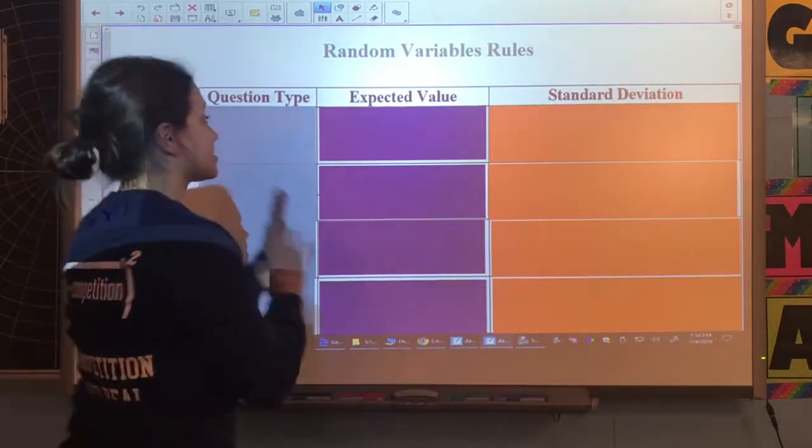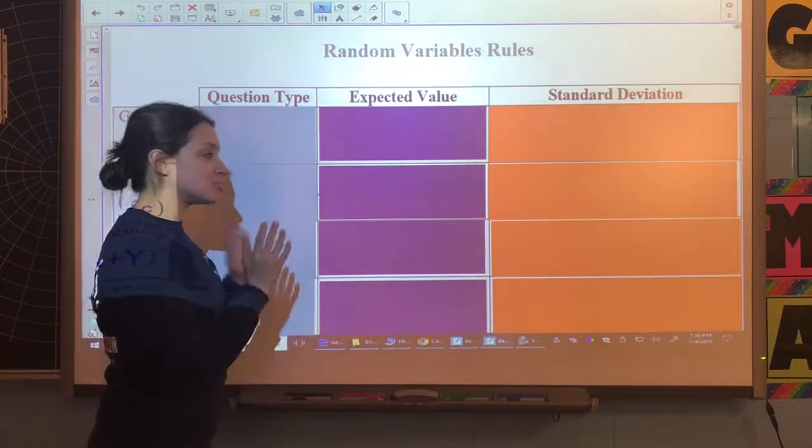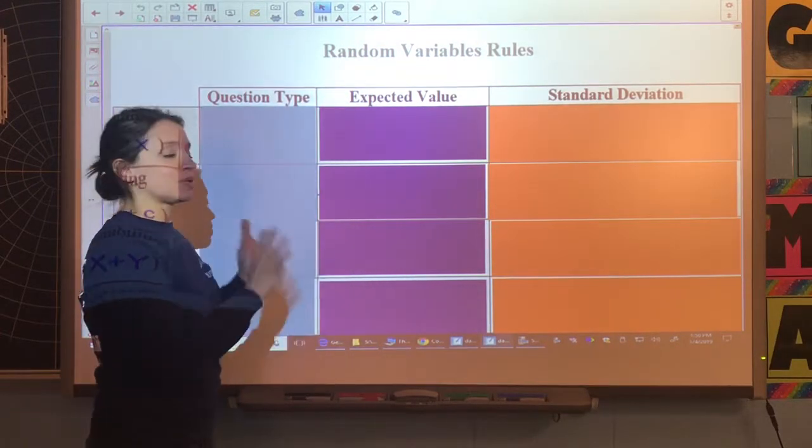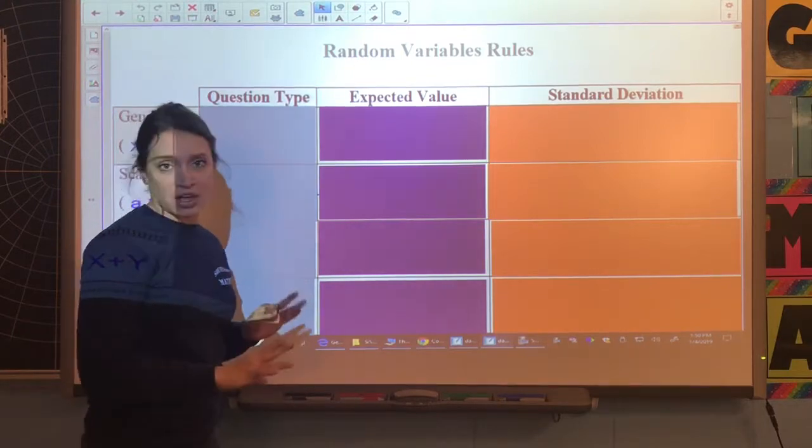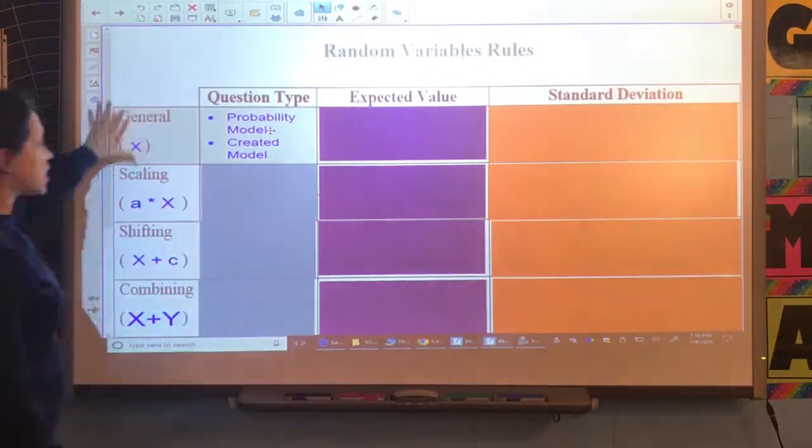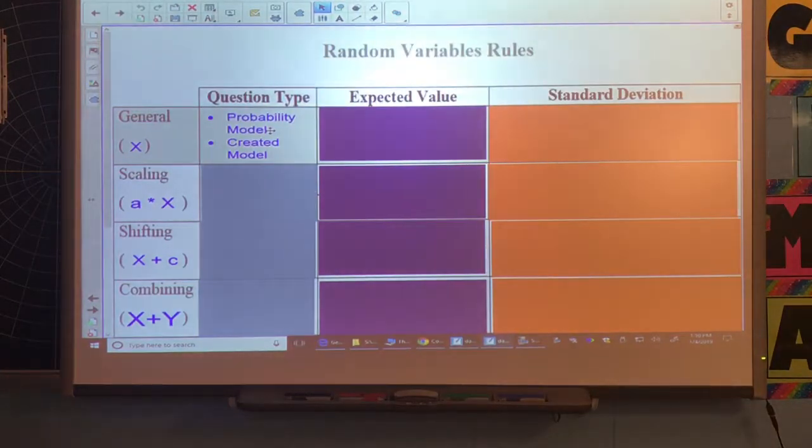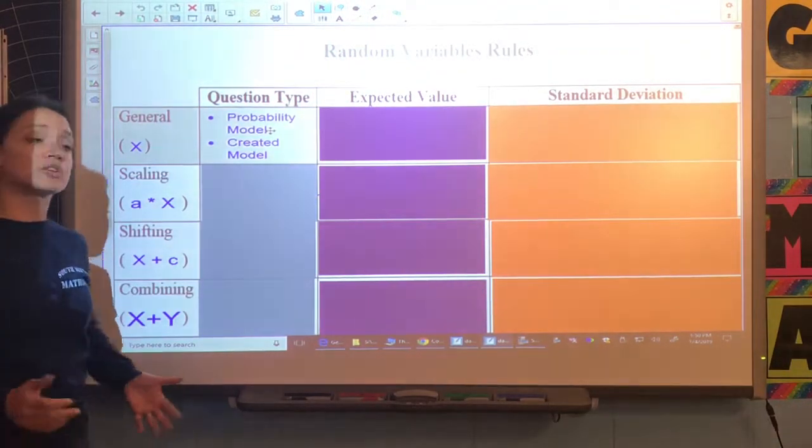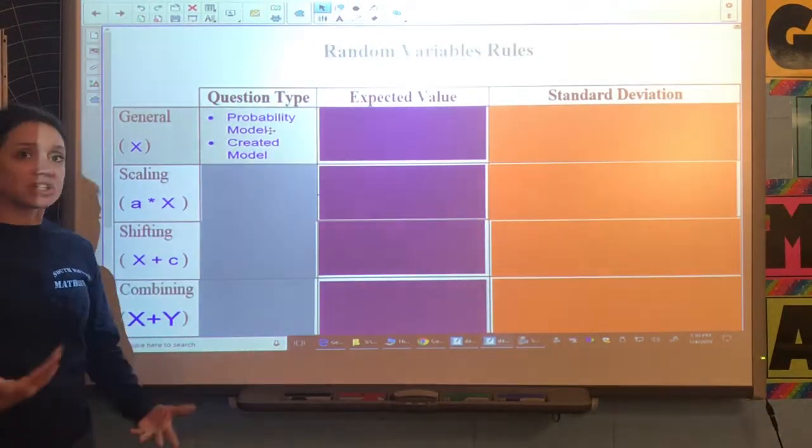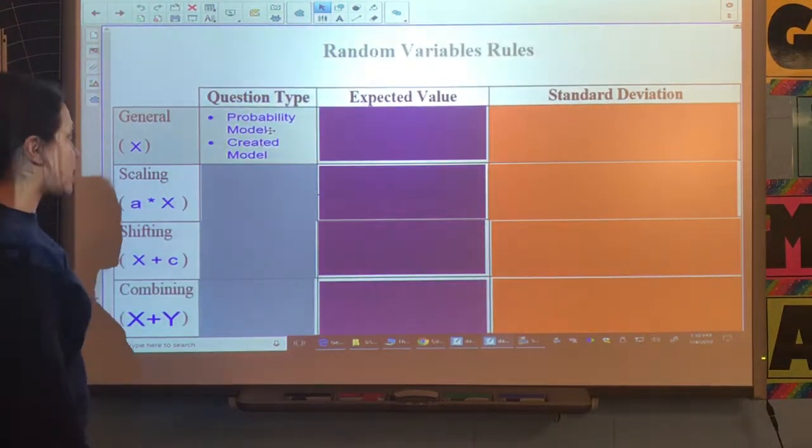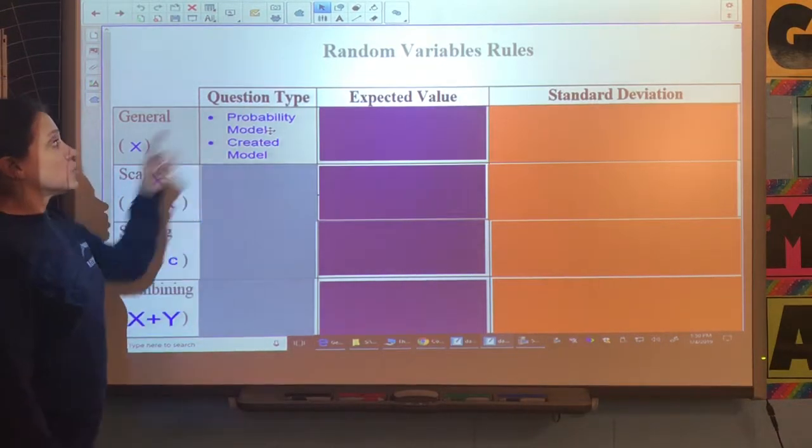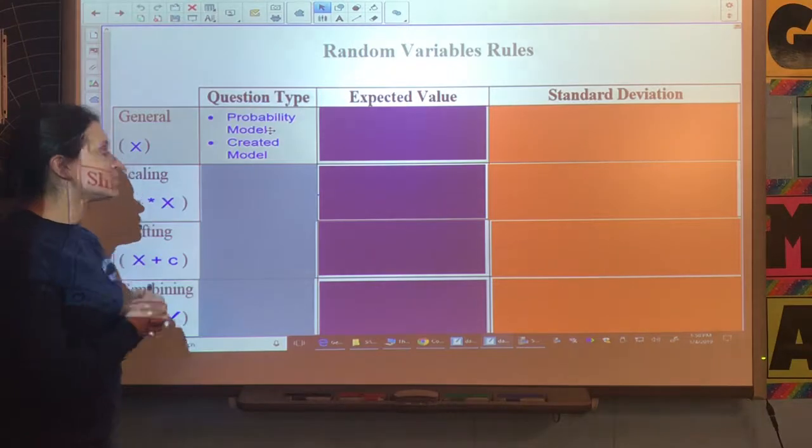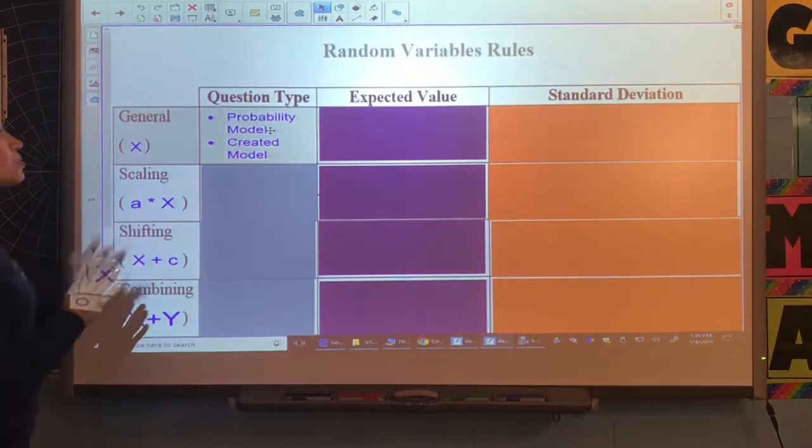As a reminder, you can stop this video and pause it at any time. That's the beauty of a video. If I'm moving too fast, just pause it. Let's start with a general random variable X. We just looked at a problem where that random variable could be spinning a spinner, maybe rolling a dice, just any random variable. If it gives you a probability model, this could be in the form of a table, a histogram, or you're being asked to create a model from a given scenario.